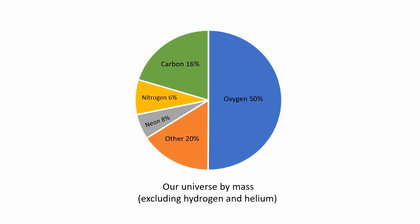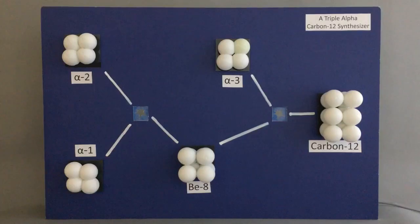Next, let's view a simulated demo of the triple alpha process. We will see how the three alphas fuse to create carbon in the most unlikely of circumstances. This is a simulator of the triple alpha process for carbon-12's formation. This device will demonstrate how the triple alpha process works to create carbon.